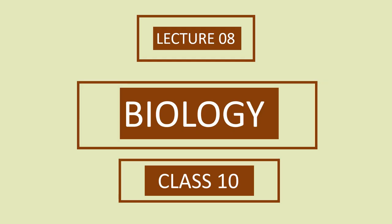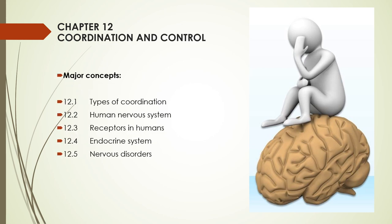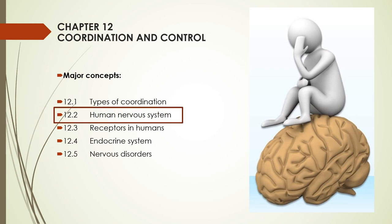This is the 8th video of 10th grade biology, a series of video lectures prepared by the faculty of DPS. Continuing with the 12th chapter, coordination and control. In the previous video we tried to understand how different organs of the human body work together in coordination, perform their respective duties, support each other and facilitate each other. We now know that two types of coordination systems exist in our body: nervous coordination and chemical coordination. In this video we will learn some basic points of the human nervous system.